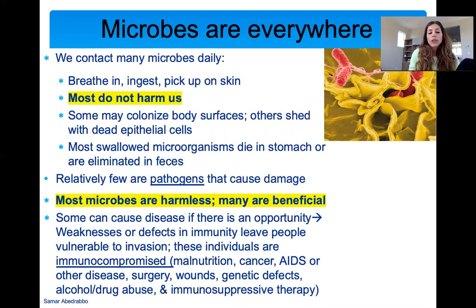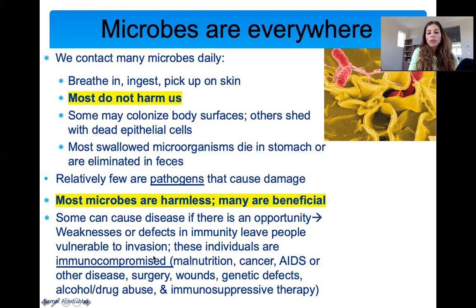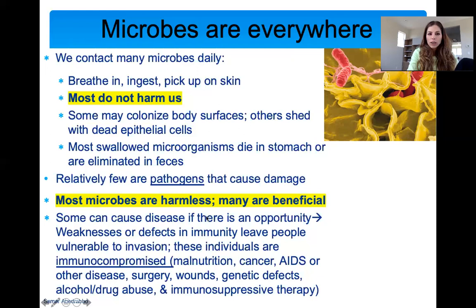Some microbes can cause disease if there's an opportunity. Opportunistic pathogens are pathogens that are otherwise harmless, but if a person is immunocompromised they may make them sick. Immunocompromised means someone has any disease, disorder, or illness that has compromised their immune system. For example, patients with cancer, patients who had surgery, or patients who had burns get opportunistic infections more. The take-home message is: microbes are everywhere and you're getting exposed to them all the time, but most are not doing anything harmful.